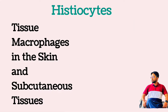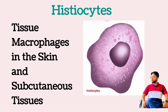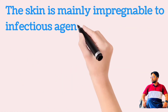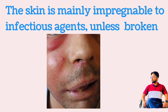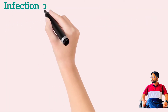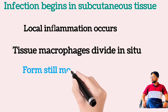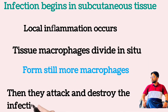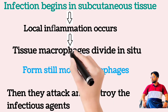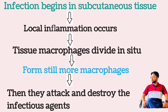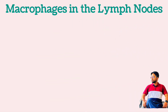Tissue macrophages in the skin and subcutaneous tissues are also called histiocytes. Although the skin is mainly impregnable to infectious agents, when infection begins in the subcutaneous tissues, the local tissue macrophages can divide in situ and form still more macrophages, then perform the usual function of attacking and destroying the infectious agents.